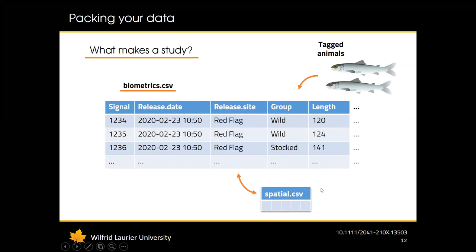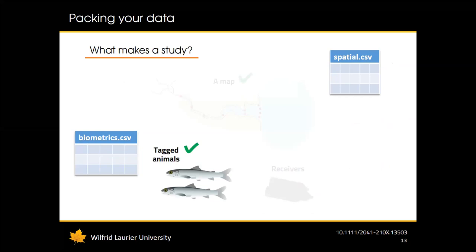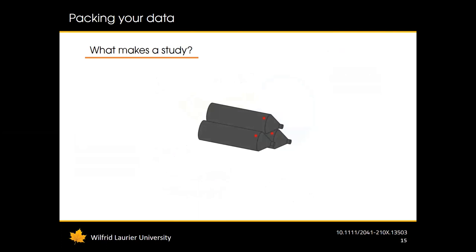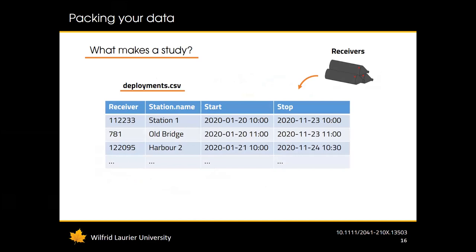Receivers have a serial number and deployment information — where and when they were deployed to a specific station. This information goes into deployments.csv, which has the receiver serial number, the station where it was deployed, and the start and stop times of the deployment period. You can have multiple receivers deployed at the same station, or the same receiver deployed at different stations over time. Again, the station name must match a name in the spatial.csv file.